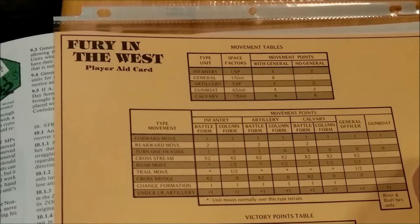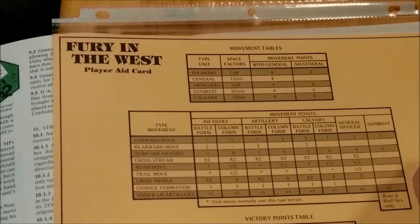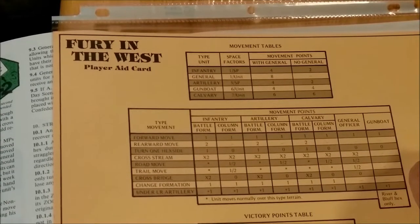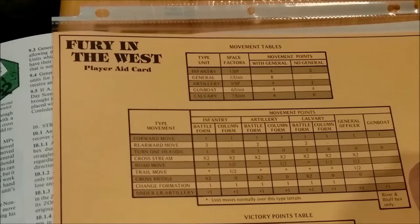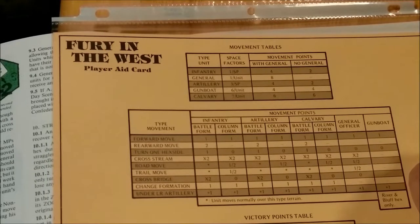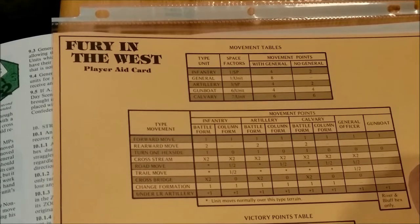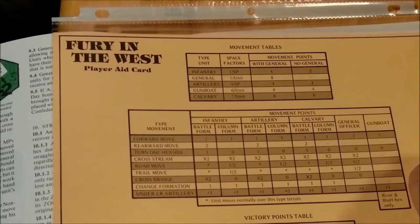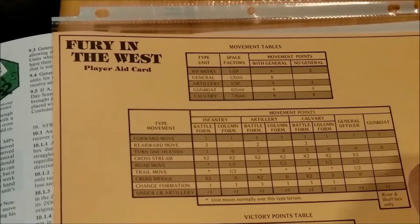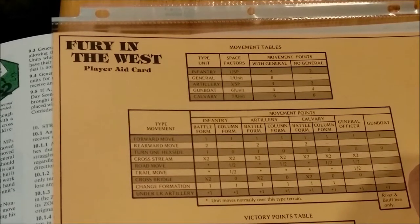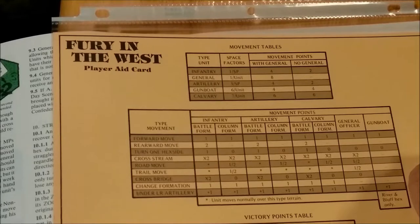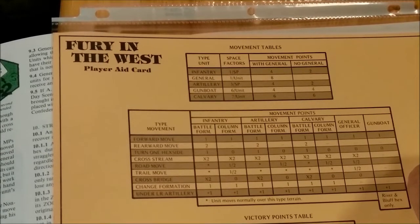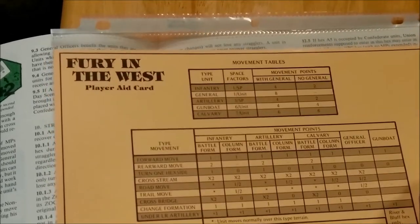Things like crossing streams, crossing bridges for units in battle form. An infantry unit is going to pay one to move forward, two to reverse. You can also be in cavalry formation, in which case most things are the same except you don't pay to turn hex sides. So it matters which formation you're in. Of course there's penalties for both with respect to combat.